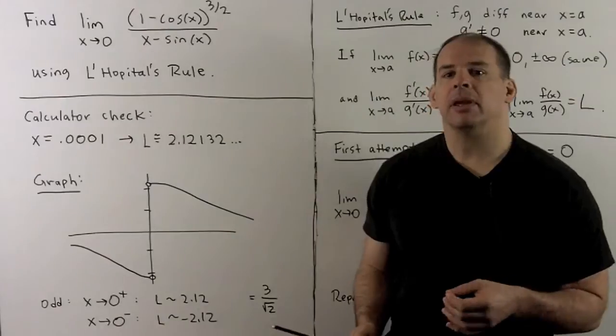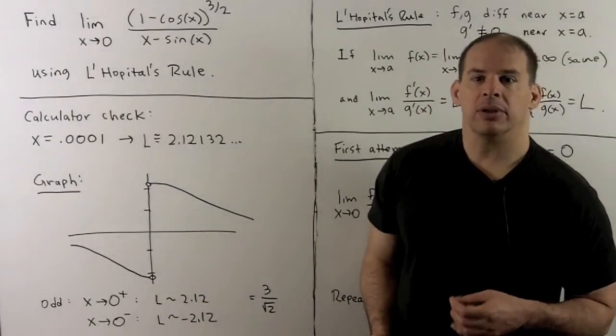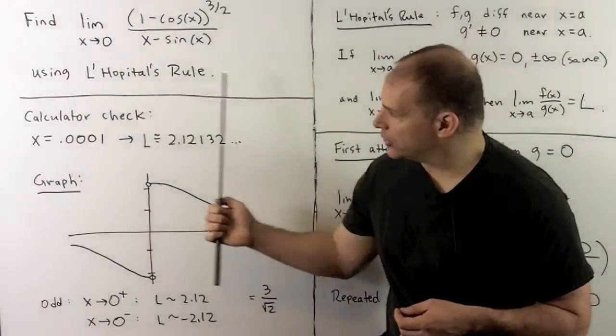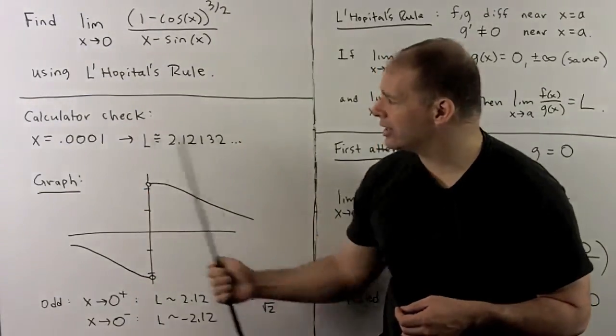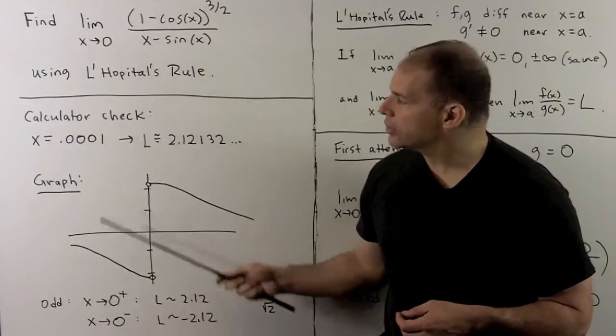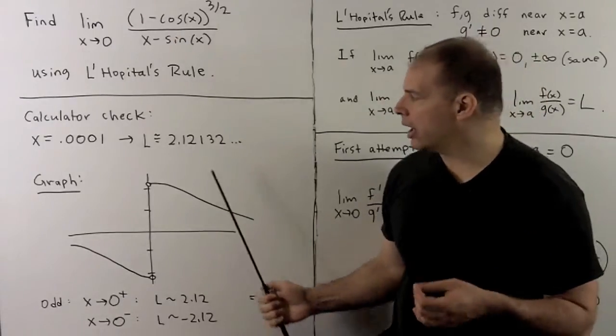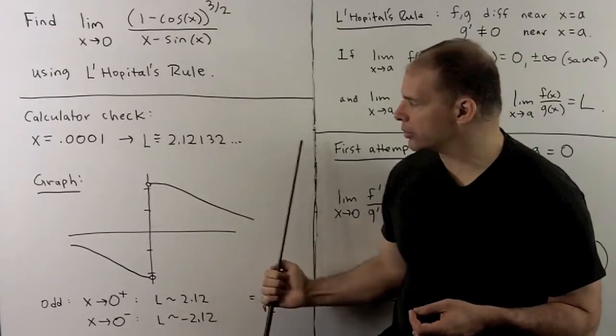Before we do that, let's try to get a feel for what the limit actually is. So we'll take some numbers that are close to zero, put them into our calculator, and see what comes out. If I try 0.0001, out comes 2.12, and that goes on.